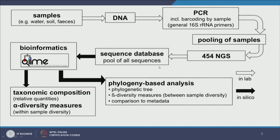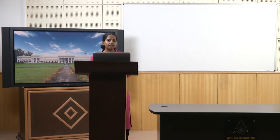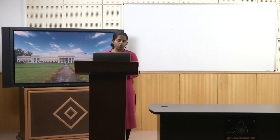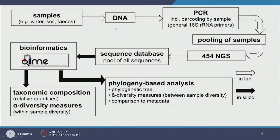Now let us move on and see how we make sense of all this information — how we can take an environmental sample and understand what is going on. Let us say you take a sample: water, soil, fecal matter, or activated sludge. If you are an environmental engineer, you are typically working with water, fecal matter, activated sludge, or soil. The first step is to extract nucleic acids — in this diagram we are extracting DNA, but you might also want to extract RNA depending on your interest.